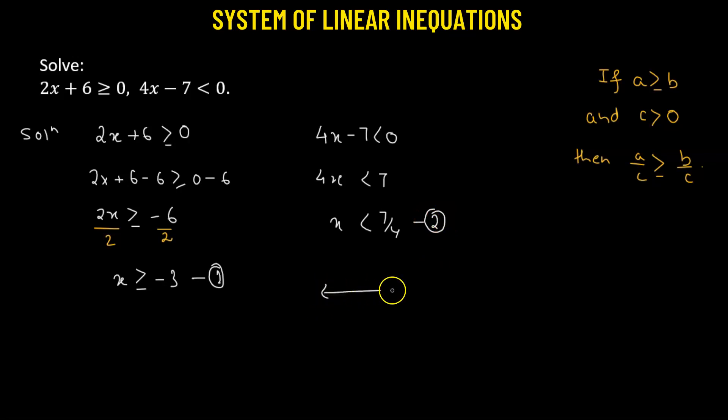Now what we'll do? On the number line, we will consider the point x equals to negative 3, and the other one as x equals to 7 over 4.